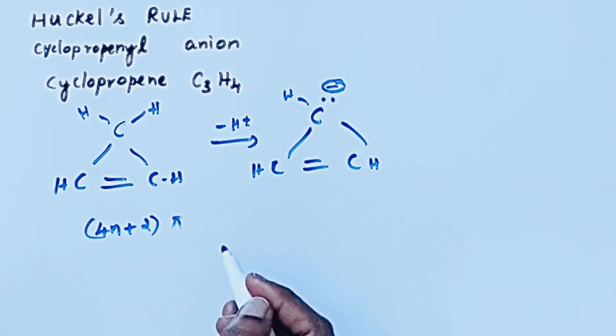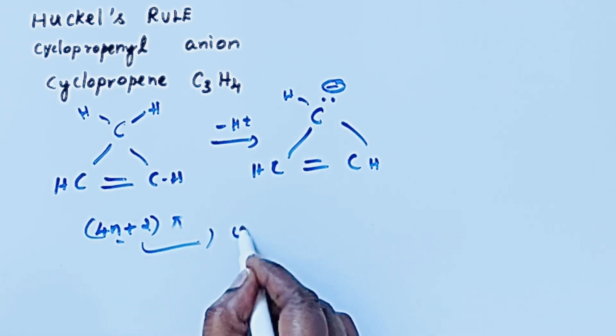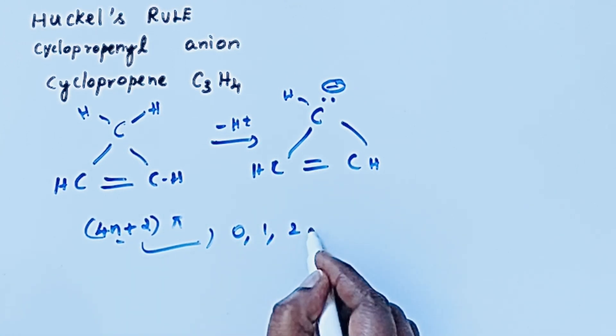What is 4N plus 2 pi electron? Here N represents the integer. It means 0, 1, 2, etc.